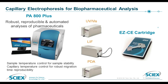The P100 Plus Pharmaceutical Analysis System is a capillary electrophoresis platform that provides robust, reproducible, and automated analysis of biopharmaceuticals. It has a temperature-controlled sample garage for enhanced sample stability and liquid cooling capillary temperature control for migration time reproducibility. The convenient ready-to-use EZCE preassembled capillary cartridge ensures data consistency and ease of use. With interchangeable PDA, UV, and LIF detector modules, it provides the flexibility to handle analysis using different detectors.